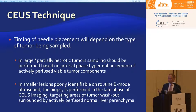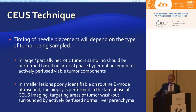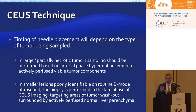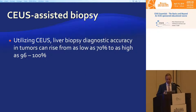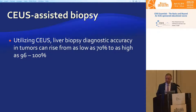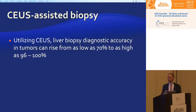Timing of needle placement depends on the tumor being sampled. For very large necrotic tumors we usually biopsy in arterial phase because that's where we see those tumors best. For small tiny lesions — most commonly metastases that only demonstrate small areas of washout — we do biopsies in the later phases. Using contrast-enhanced ultrasound, we have drastically improved our diagnostic accuracy.